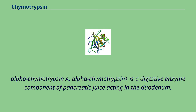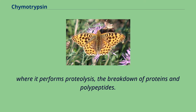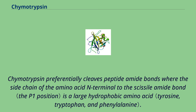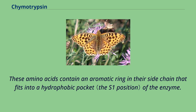Alpha chymotrypsin A, or alpha chymotrypsin, is a digestive enzyme component of pancreatic juice acting in the duodenum, where it performs proteolysis — the breakdown of proteins and polypeptides. Chymotrypsin preferentially cleaves peptide amide bonds where the side chain of the amino acid N-terminal to the scissile amide bond is a large hydrophobic amino acid. These amino acids contain an aromatic ring in their side chain that fits into a hydrophobic pocket of the enzyme.